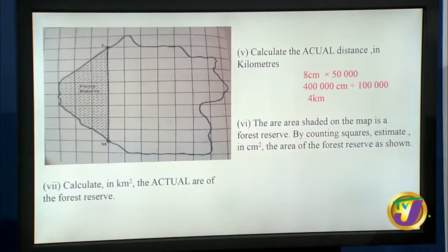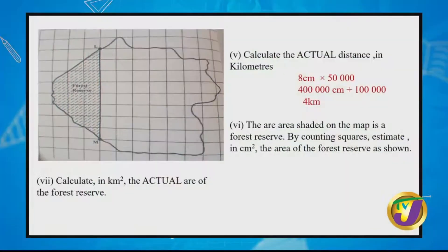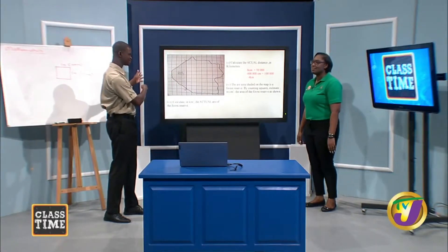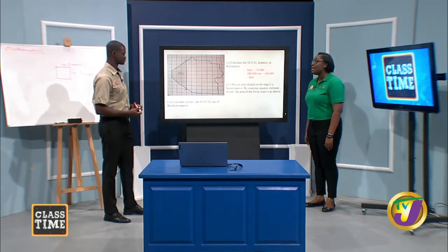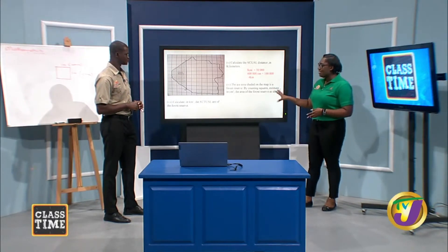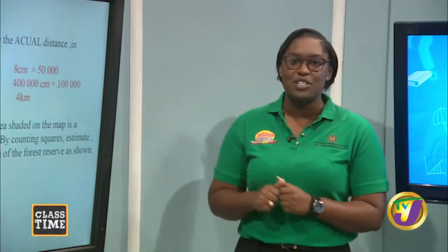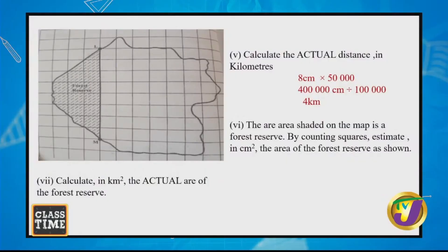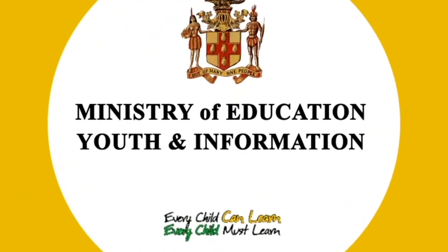Part six asks you to estimate, in square centimeters, the area of the shaded forest reserve by counting squares. This is where estimation comes in, as we discussed at the beginning. We're going to call this homework — take a screenshot or picture of the diagram and estimate the area of the forest reserve by counting the squares.